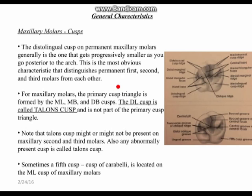For maxillary molars, the primary cusp triangle is formed by the mesiolingual, mesiobuccal, and distobuccal cusps. The distolingual cusp is called Talon's cusp and is not part of the primary cusp triangle. The cusp triangle consists of three cusps — mesiolingual, mesiobuccal, and distobuccal — and the distolingual is an extra cusp, which is why it's called Talon's cusp.